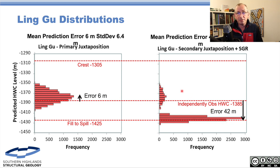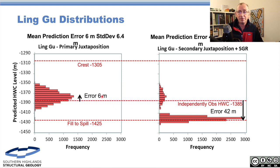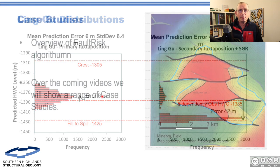If we quantify the error, we've got a mean 6-metre error for juxtaposition alone. If we include SGR, the mean error ends up being about 42 metres. So juxtaposition fits a lot better than the combination.